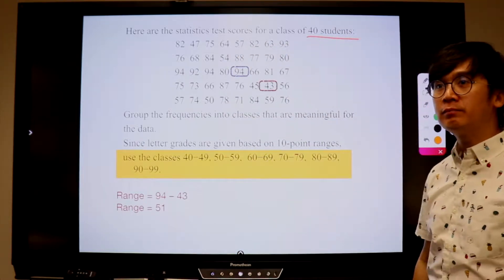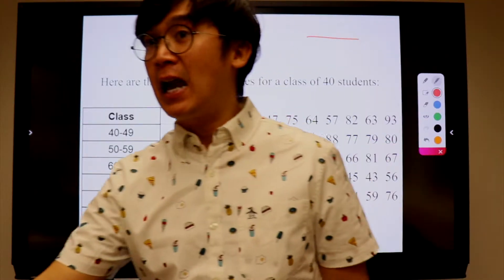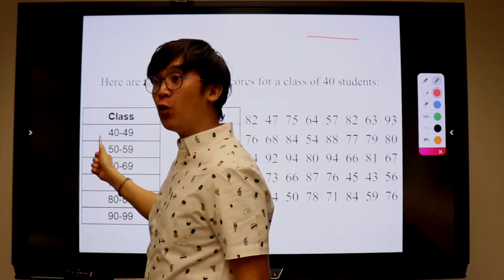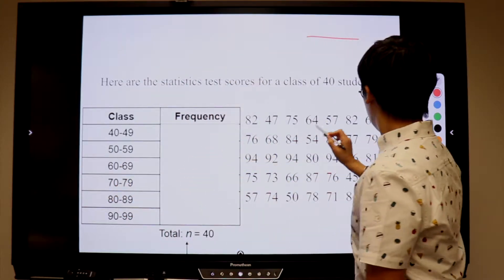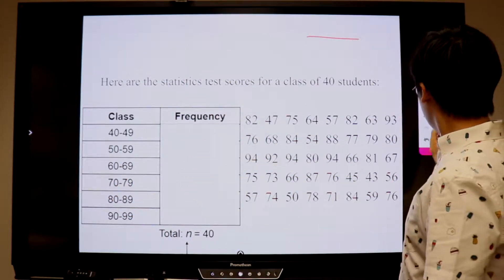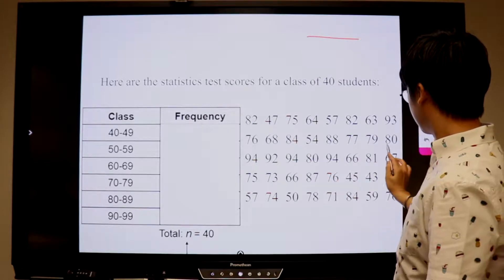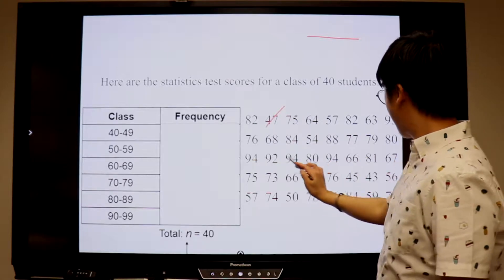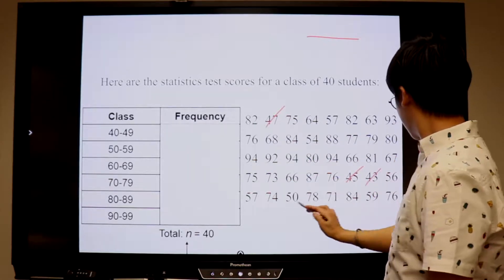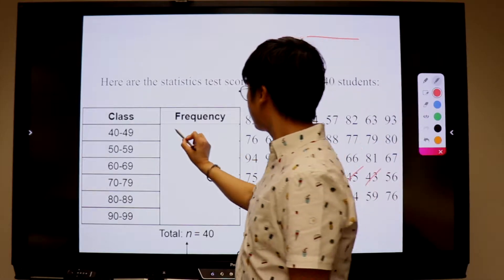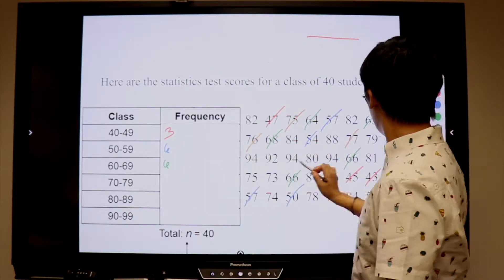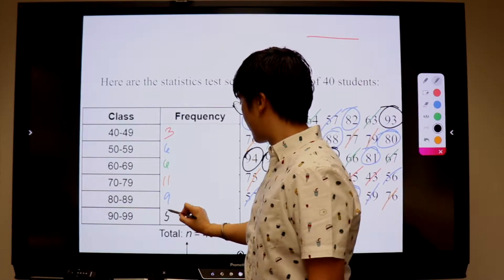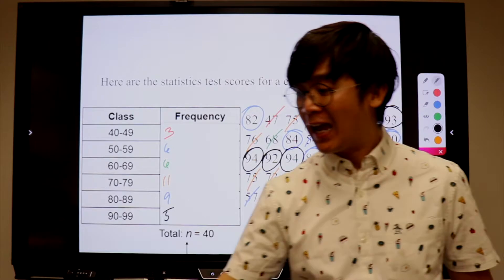Let's have our table of values and count the number of students who scored between 40 and 49. We have scores of 43 and 45 in that range, giving us 3 students. Let's see if we counted them right.